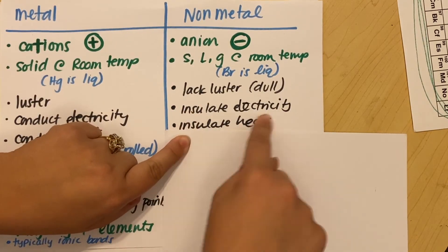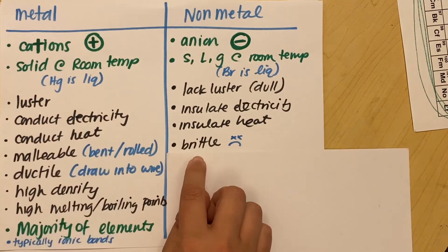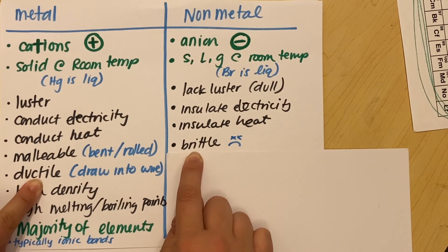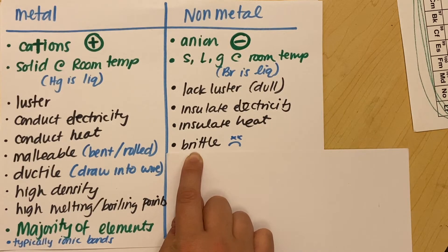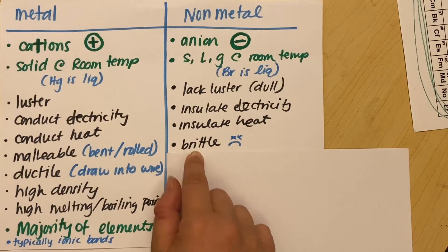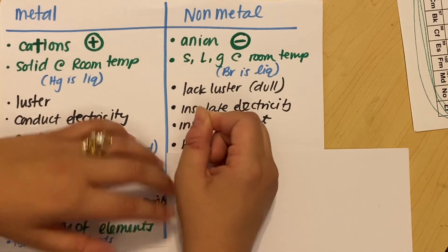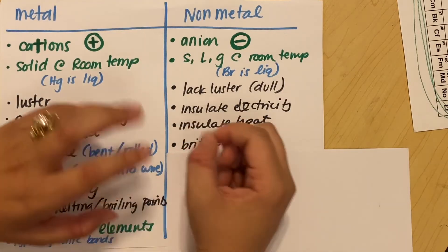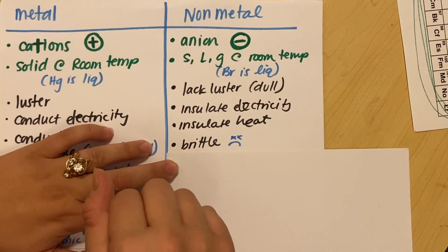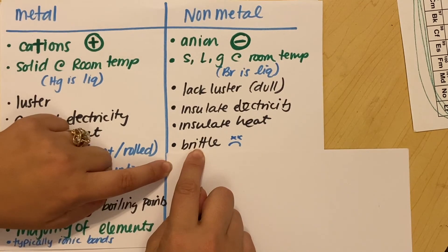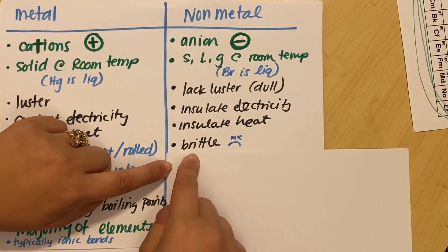So non-metals, very good insulators. Instead of being malleable or ductile, non-metals are brittle. And again, if you think about your pencil lead, we all know this to be very true, right? You click, click your pencil lead and you go to press down on your mechanical pencil and crack, it breaks, right? Because it's brittle. And then you click, click for your next pencil lead and you go to draw again and then crack, it breaks again. Non-metals are very brittle.